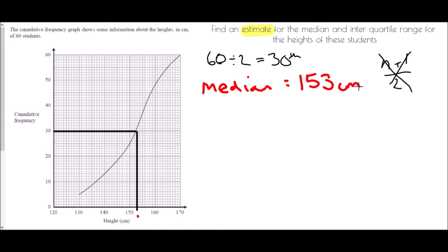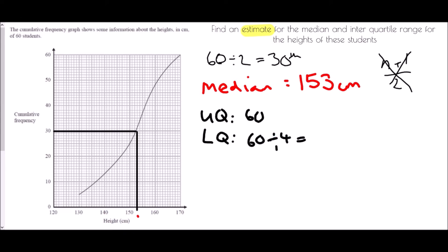For the interquartile range, we need an upper quartile and a lower quartile. You may have used formulas like (n+1)/4 and 3(n+1)/4, but we don't need to worry about those here because it's an estimate. We just need to find a quarter of the data. The lower quartile is 60 divided by 4, which is the 15th value, and the upper quartile is 3 lots of 60 divided by 4, which is the 45th value.